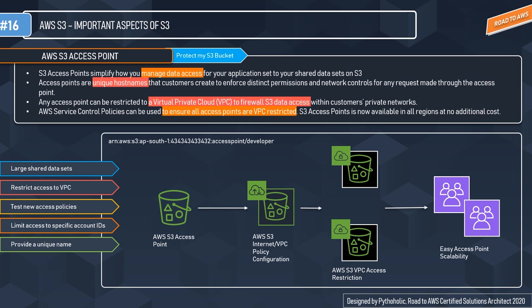The fourth use case is to limit access to specific account IDs. You can create VPC endpoint policies that permit access only to access points owned by specific account IDs. The fifth use case is to provide a unique name — you can give your access point a unique name to keep it unique within your region and account.